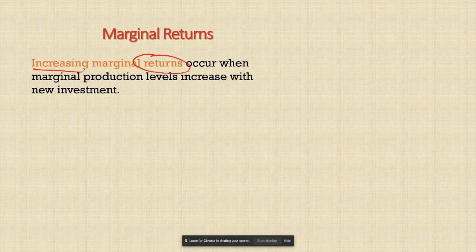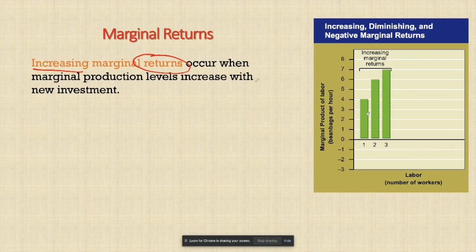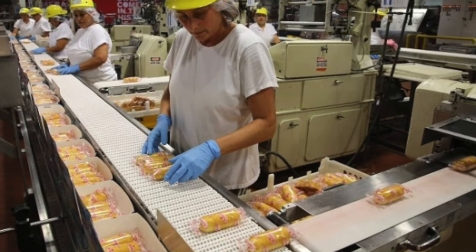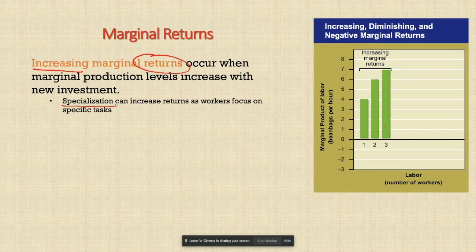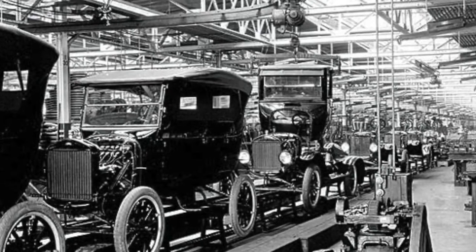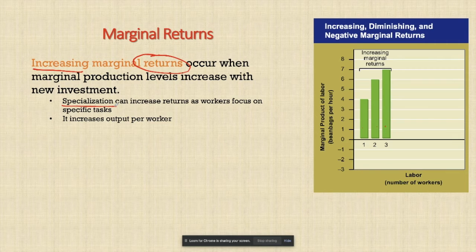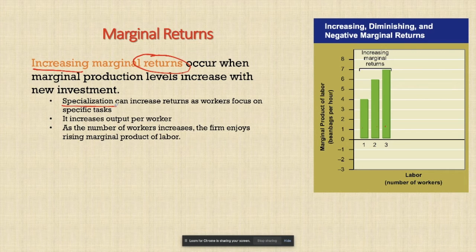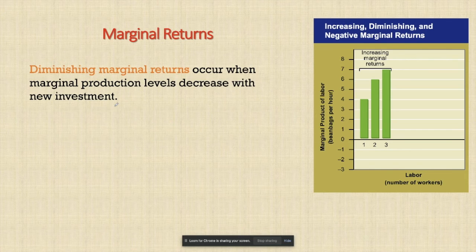We want to look at increasing marginal returns, which means production levels are beneficial for the new investment. In the beanbag example we saw an increase for the first three workers — every additional worker had a marginal product of labor greater than the worker before them. One thing that really assists this is specialization. Henry Ford streamlined the production line for the Model T with specialization. It increases output per worker because there's no confusion, no sharing of resources — everyone has what they need to do their one job.